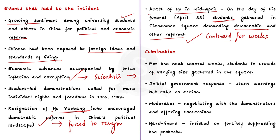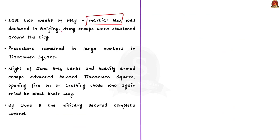An intense debate arose between government and party officials on how to handle the mounting protest. Moderates advocated for negotiation and concessions, but this was overruled by hardliners who feared anarchy and insisted on forcibly suppressing the protest. During the last two weeks of May 1989, martial law was declared in Beijing and army troops were stationed around the city. Troops tried to reach Tiananmen Square but were blocked by thousands of Beijing citizens. Protesters remained in large numbers, with western journalists providing live coverage of events.